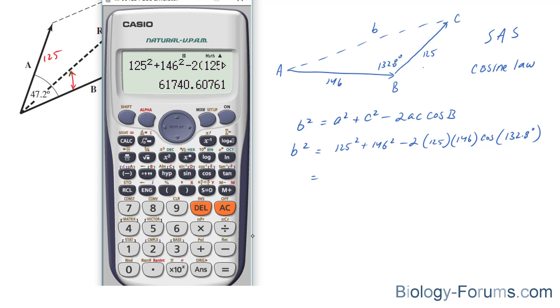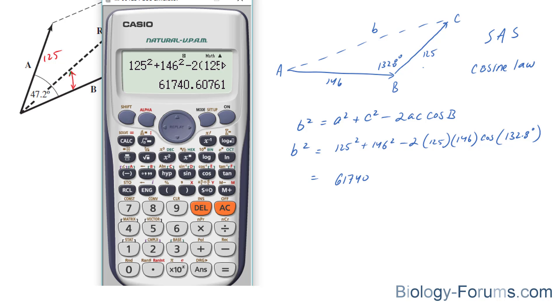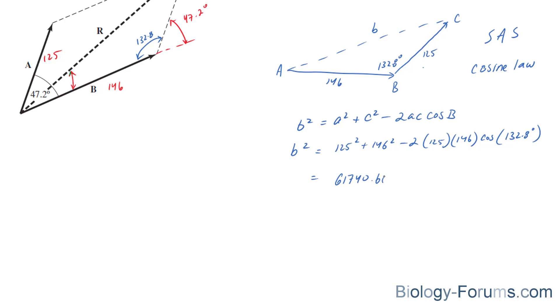And we end up with this huge number, which is expected. 61,740. Let's carry a few decimal places. And we're going to square root both sides to isolate for b.